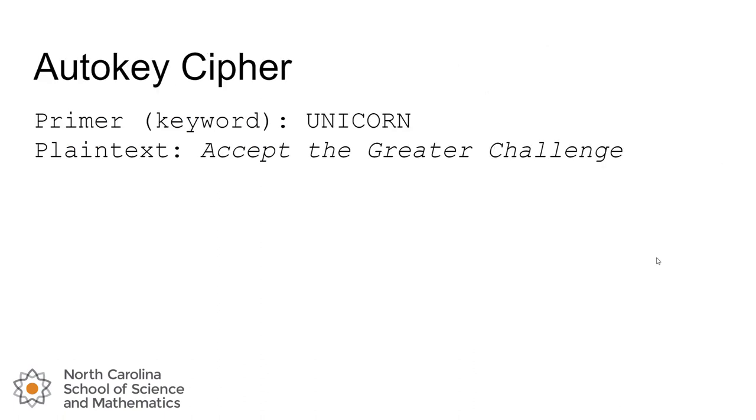So let's take a look. The Autokey Cipher starts out pretty similarly to the Vigenere Cipher. We need a keyword—we're going to call it a primer. We're going to see that this keyword by itself will not be the running keystream, but it'll be part of it and it's going to start the keystream. Our plaintext, we're going to use Accept the Greater Challenge, the NCSSM school motto, and we're going to go ahead and encrypt that.